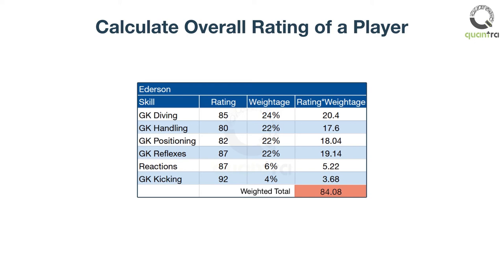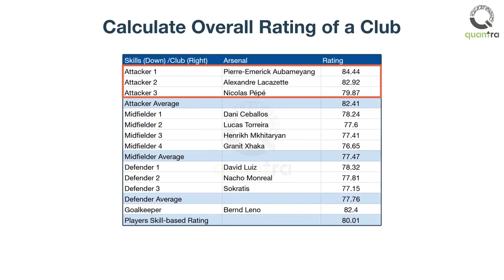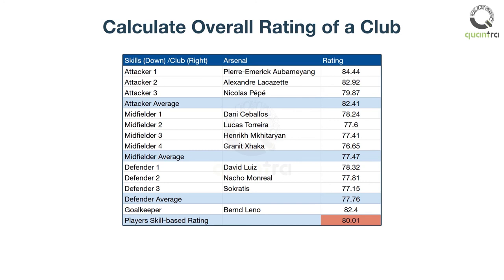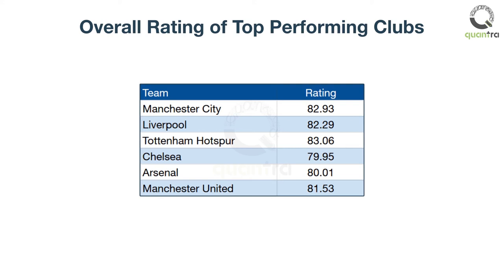Similarly, this is done for all the players. By now, we have the overall ratings of all players in each club. To calculate the rating of the club, we need to consider the overall ratings of the 11 team members. We have assumed 3 attackers, 4 midfielders, 3 defenders, and 1 goalkeeper for each team, and selected the player based on playtime in the previous season. Based on this selection, the ratings for Arsenal are as shown. Taking the average of the rating column gives Arsenal an overall rating of 80.01. Similarly, the overall rating of the other 5 clubs is calculated. You can refer to the calculations in the upcoming Excel document.